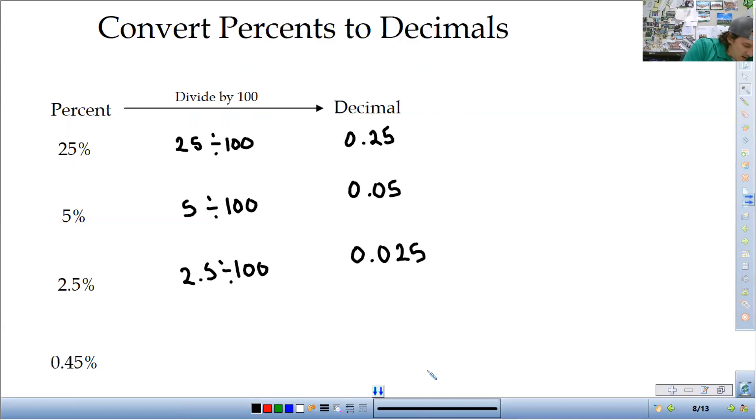So 2.5% divided by 100 is 0.025. And then the last one, if it has a percent sign in it, it is in percent form. You need to change it to a decimal. So this is in percent form. To change it to a decimal form, I need to divide by 100. I get 0.0045. You can also think of it as moving the decimal over two spots. That's the same thing as dividing by 100.